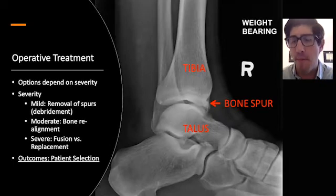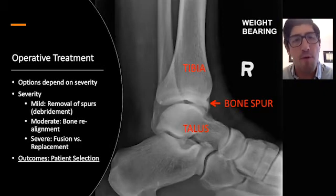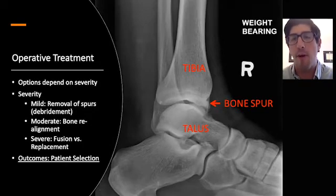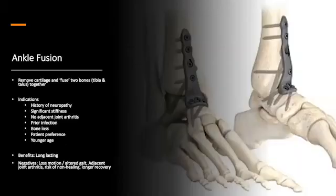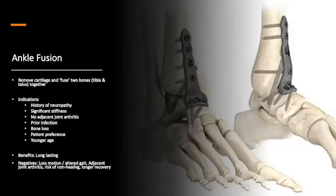We've gone over some other interventions — arthroscopy, debridements, biological resurfacing. But in terms of fusion and replacement, this is often what we're considering when we have full ankle arthritis in the entirety of the ankle at end-stage, and these other modalities will not provide the relief or outcomes that we and our patients desire. So what is an ankle fusion? Ankle fusion is where we actually remove the remainder of the cartilage within the ankle joint and weld those bones together to build basically one bone, which eliminates the motion in the joint and essentially eliminates the pain.